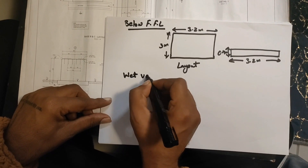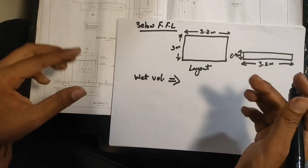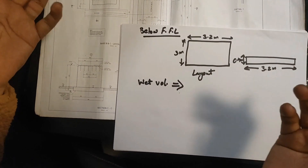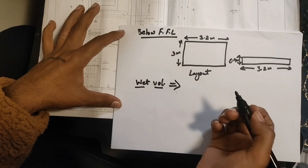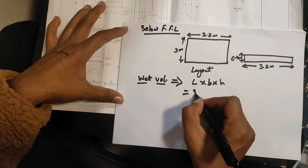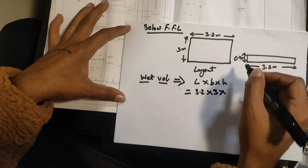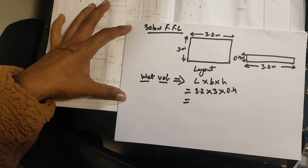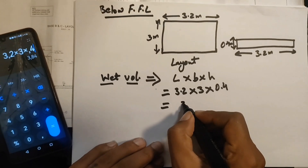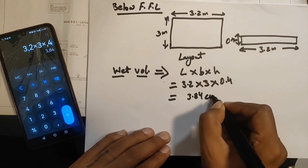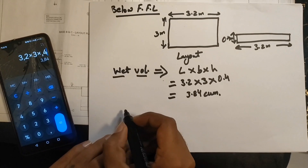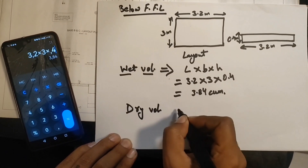Let's calculate the wet volume — the volume of concrete after mixing cement, sand, and aggregate with water. The wet volume equals length × breadth × height. The length is 3.2 m, breadth is 3 m, and height is 0.4 m. So: 3.2 × 3 × 0.4 = 3.84 cubic meters of wet volume. Now we calculate the dry volume.